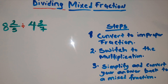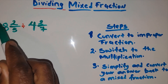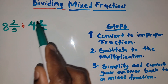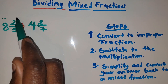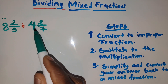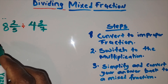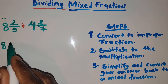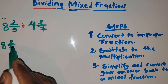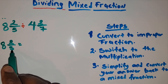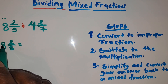So how do we actually convert to an improper fraction? First we want to solve this problem. We have a fraction, a mixed fraction, and another mixed fraction. The whole section is divided by the other section. Let us convert this to an improper fraction first. We have 8 and 2 over 5.